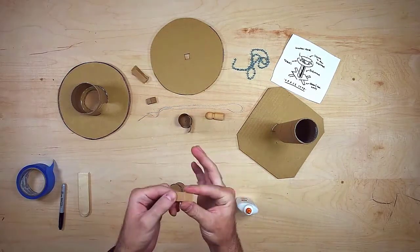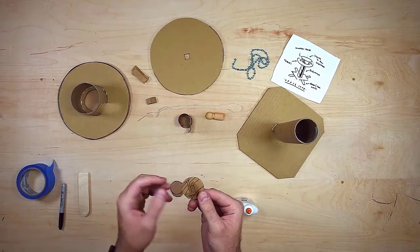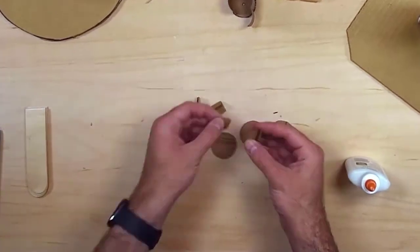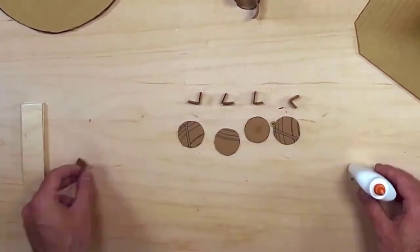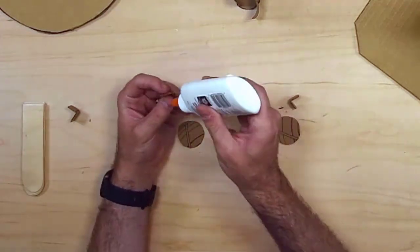While everything dries, I go ahead and work on the cafe tables. The idea here is just to fold a thin strip of cardboard over into an L shape to get a strong support for the tabletop. This is just a simple idea, but sometimes that's all you need. I go one by one and glue all four tables together.